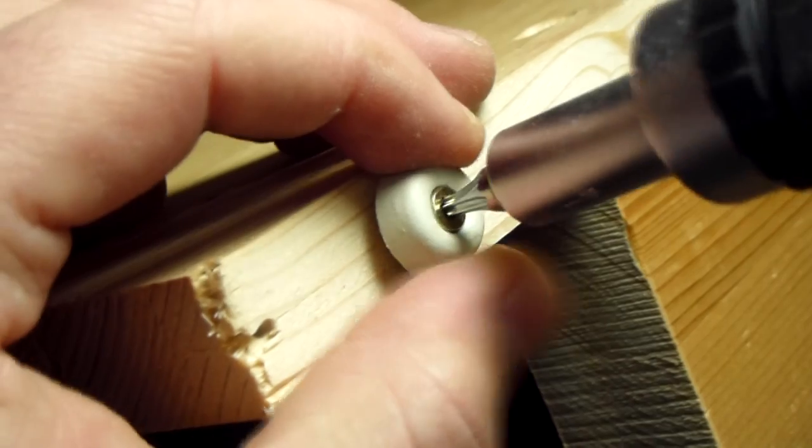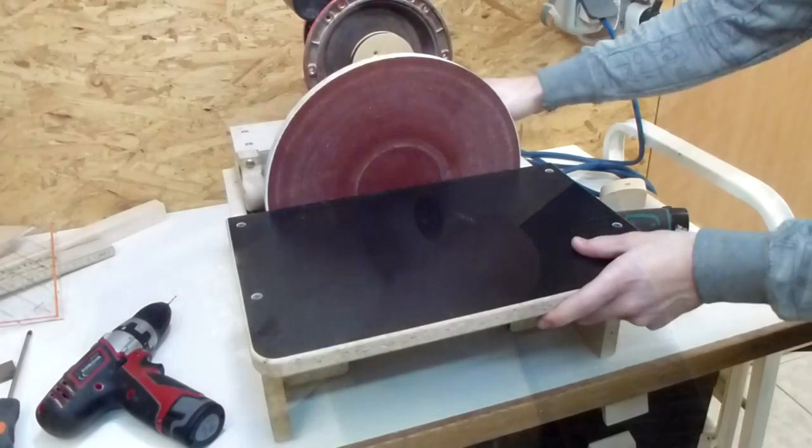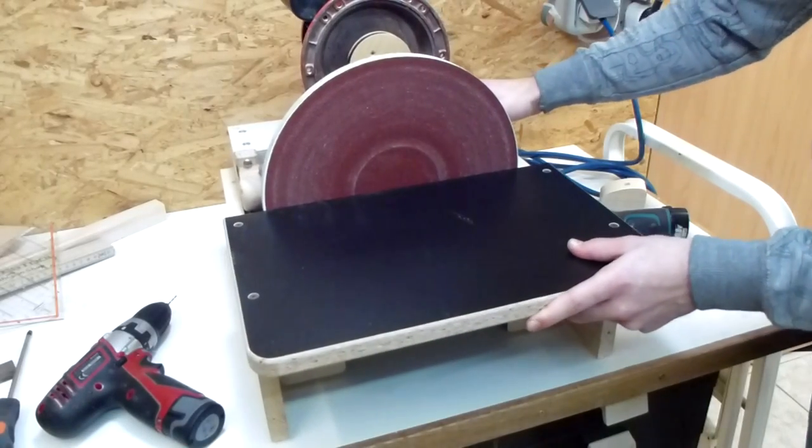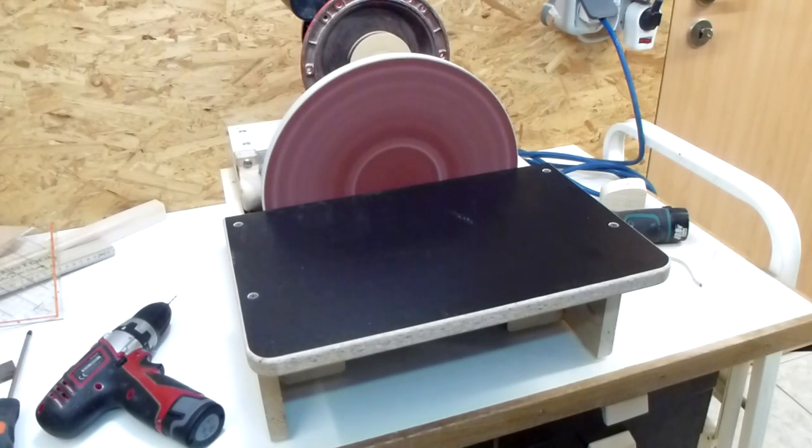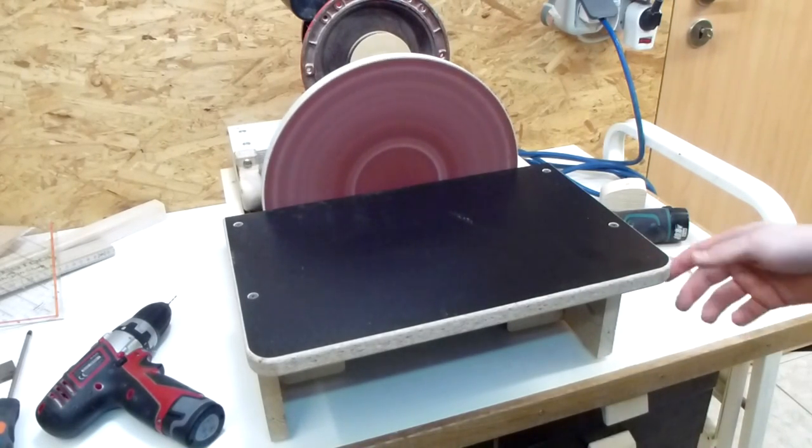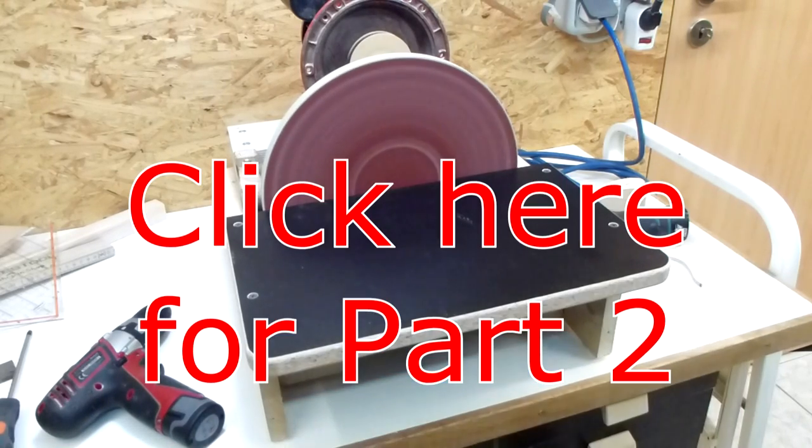And to finally fix the vibration issues I put on some rubber feet, and with these the machine stayed in place. So now the sander is basically working and in the next video I will finish it up.